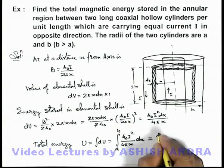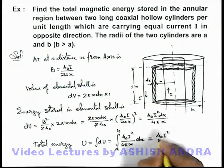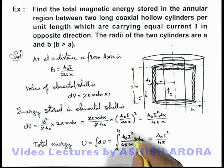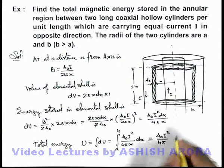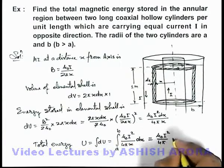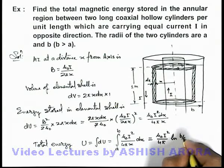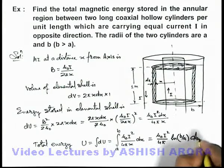In this situation it'll be μ₀I²/(4π) is a constant. Integration of 1/x will be ln x, and when we apply the limit this will be ln(b/a). That'll be the answer to this problem.